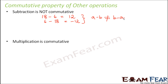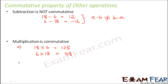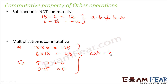Now let us talk about multiplication. Multiplication is commutative. For example, 18 into 6 is 108. When we interchange the positions, it becomes 6 into 18, which is still 108. Let us take another example: 5 into 0 is equal to 0, and 0 into 5 is also 0. So we see that A into B is equal to B into A, and that is why we say that multiplication is commutative.